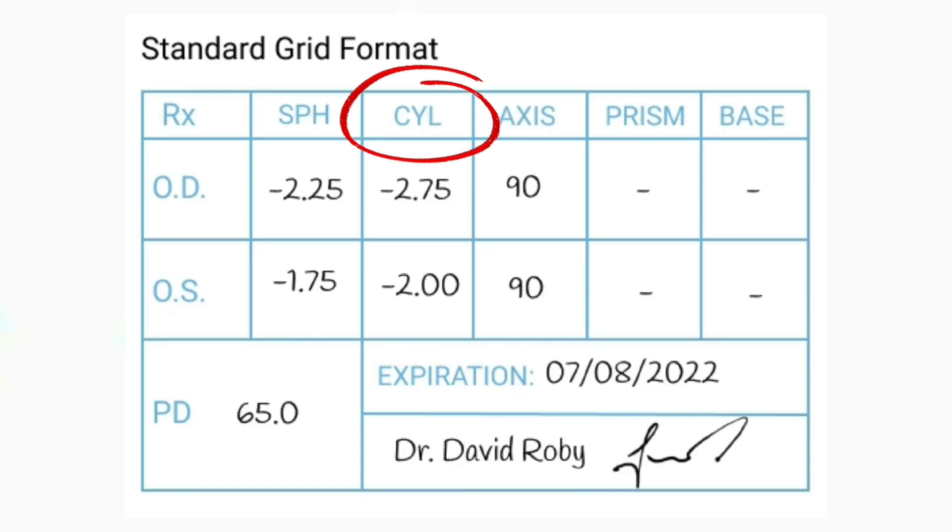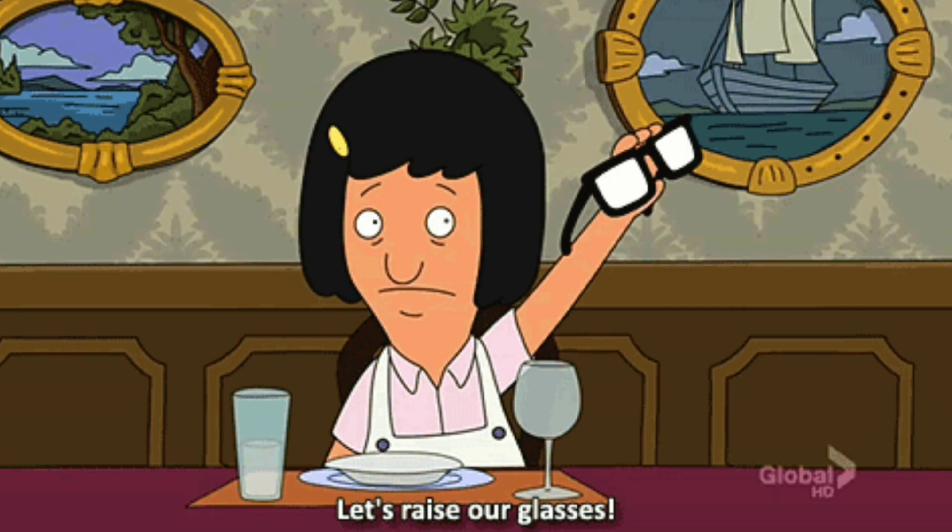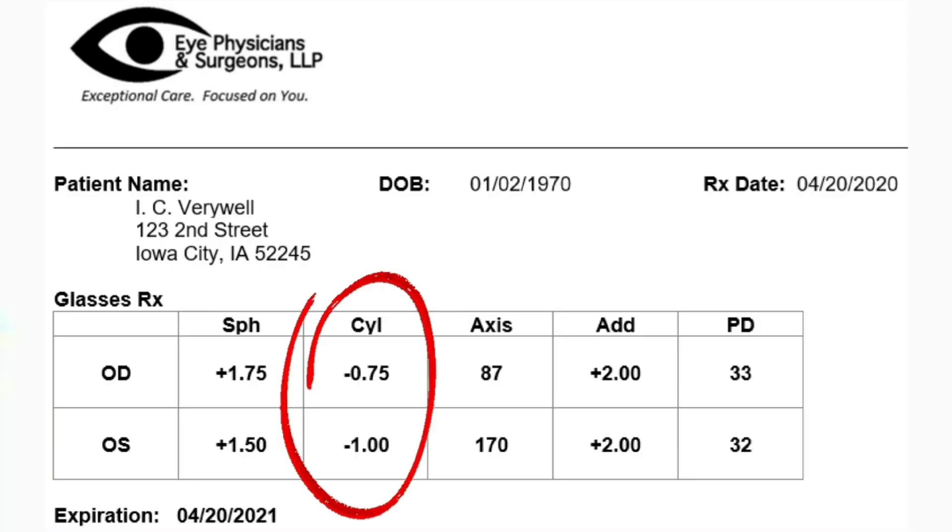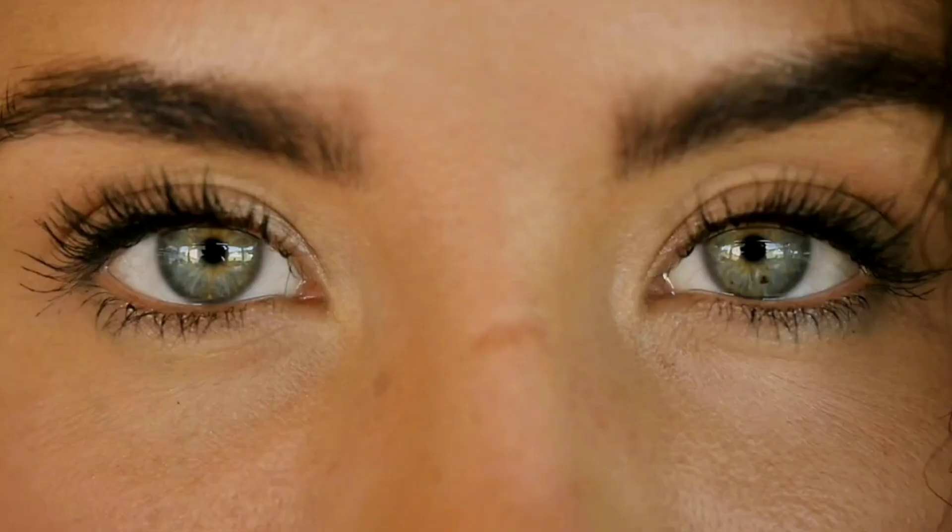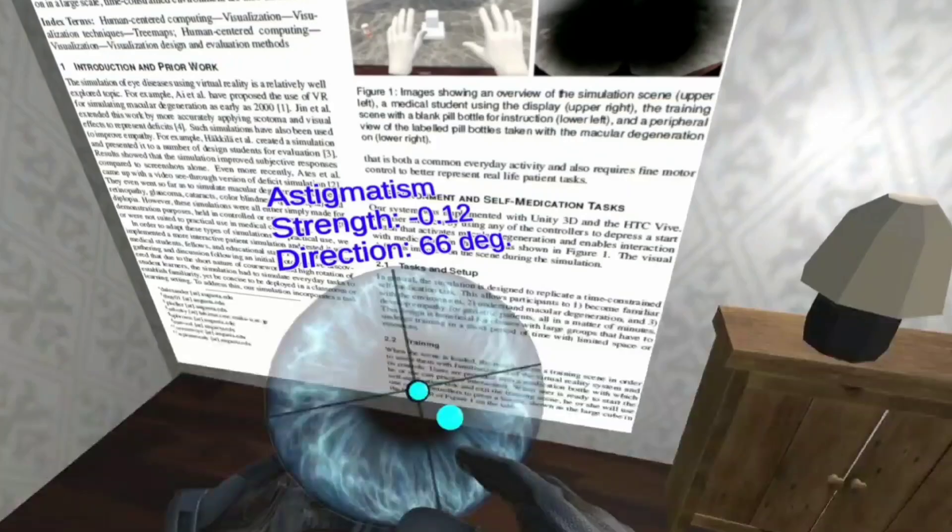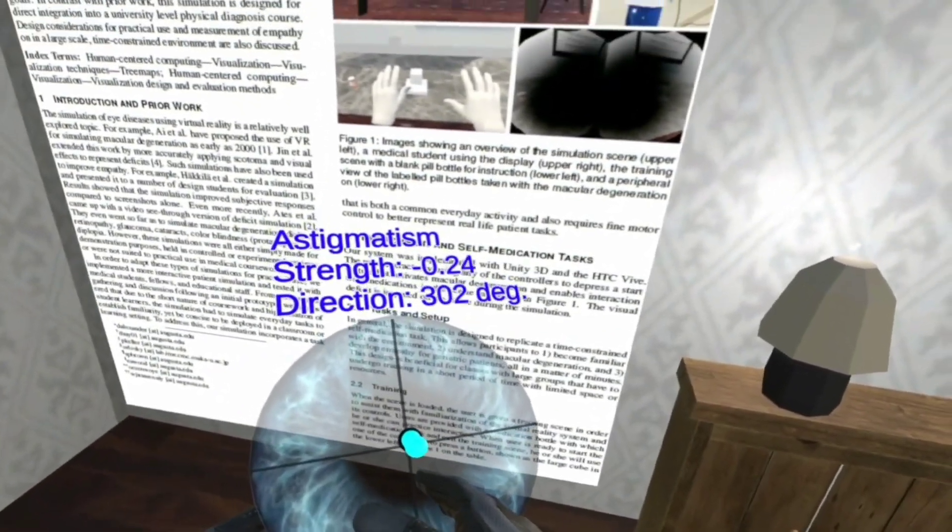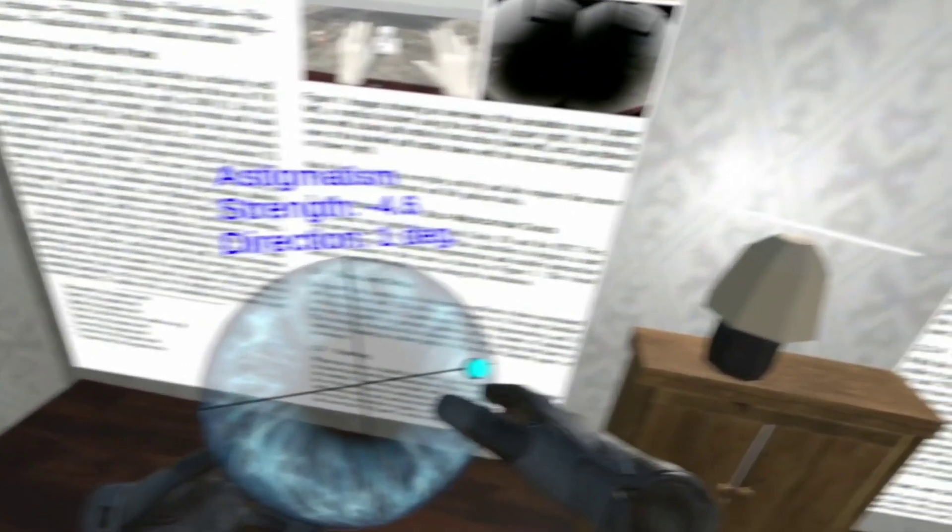Now CYL, that tells you if you have astigmatism. So if you have any number for CYL, you have some amount of astigmatism. It describes the difference in power between two axes of your eye. So if you have a positive number there, it's showing you that the certain direction, and we'll explain the directions in a second, has that much more positive power in that direction compared to its perpendicular one.